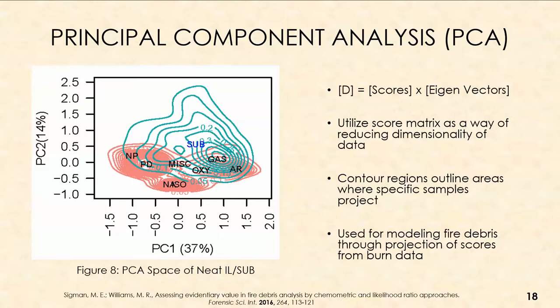Principal component analysis reduces the dimensionality of data by utilizing a score matrix to reduce the number of variables. I overlaid contour regions that outline areas where specific samples would project. In the PCA space of the neat ignitable liquid/substrate data, we have a substrate region and ignitable liquid regions including naphthenic-paraffinic, petroleum distillates, miscellaneous oxygenates, gasolines, aromatics, normal alkanes, and isoparaffinics — all sitting within an ignitable liquid region shown in coral red/pink, used for modeling fire debris projections.